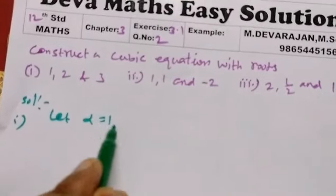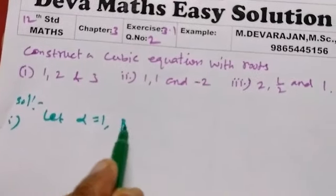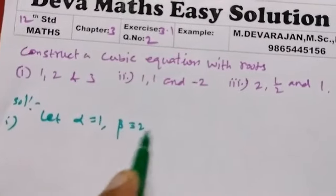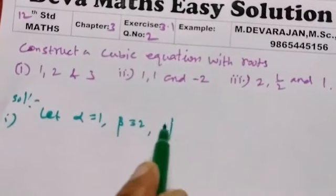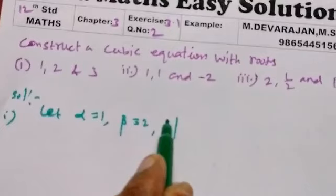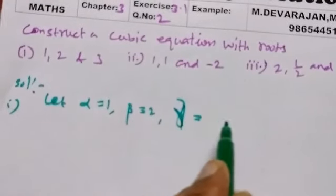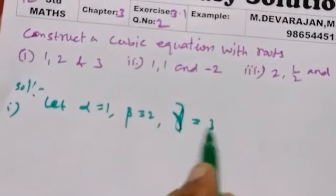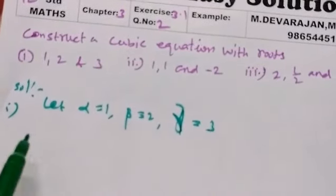Let alpha equal to 1, beta equal to 2, alpha beta gamma — so gamma equal to 3.